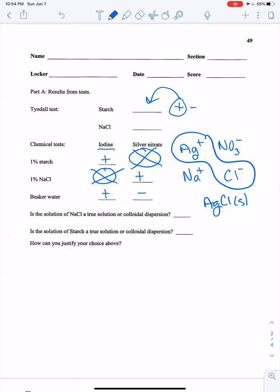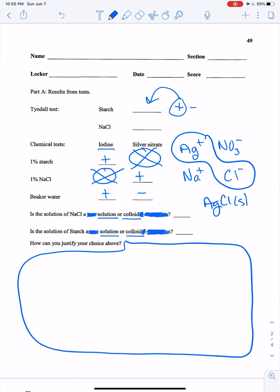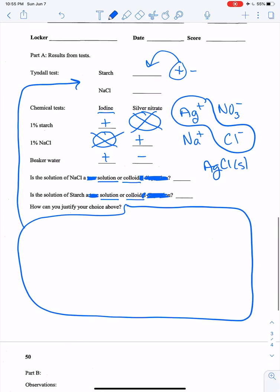The next question says is the solution of sodium chloride a true solution or a colloidal dispersion. What I want you guys to do is just go ahead and cross out 'true' there and just leave it as solution, and cross out 'a L' right here and cross out dispersion. So then we have is the solution of NaCl a solution or a colloid, and that should make it a little simpler for you guys. Do the same thing with the starch, just go ahead and make it simpler for yourselves and say is this a solution or is it a colloid, and then how do you justify your answers there. That is probably gonna be with those results right there, so just go ahead and explain it.